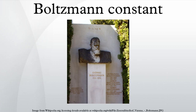The Boltzmann constant, named after Ludwig Boltzmann, is a physical constant relating energy at the individual particle level with temperature. It is the gas constant R divided by the Avogadro constant N_A. It has the same dimension as entropy. The accepted value in SI units is 1.3806488 × 10⁻²³ J/K.